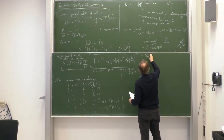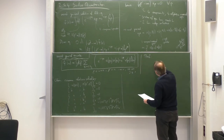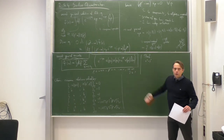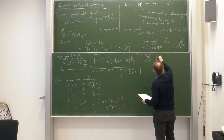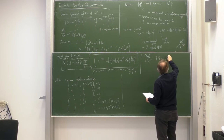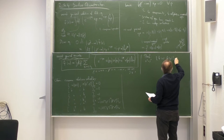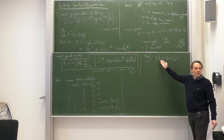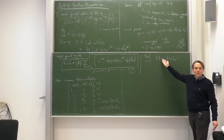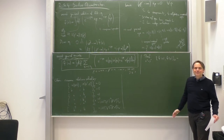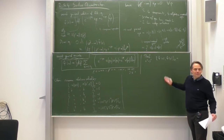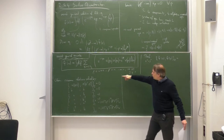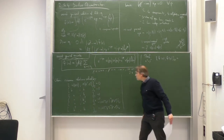To prove these commutation relations, we fix the times of all field operators to be equal, then check for example the commutator or anti-commutator of psi(x) with psi(y). That should be zero. When we plug in the ansatz and those operator relations, a with a gives zero, a with b-dagger gives zero, and b-dagger with b-dagger gives zero — so all terms vanish.